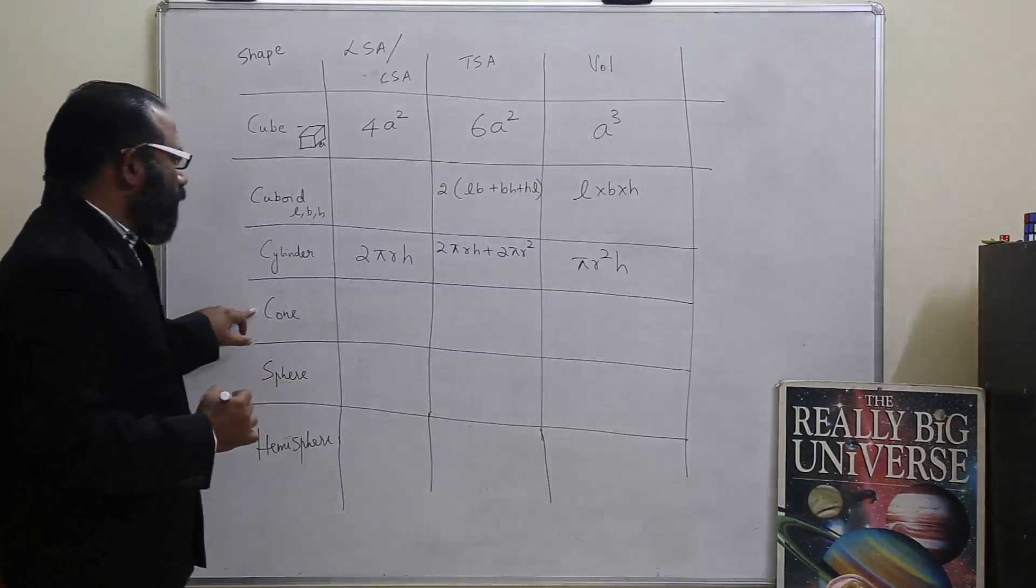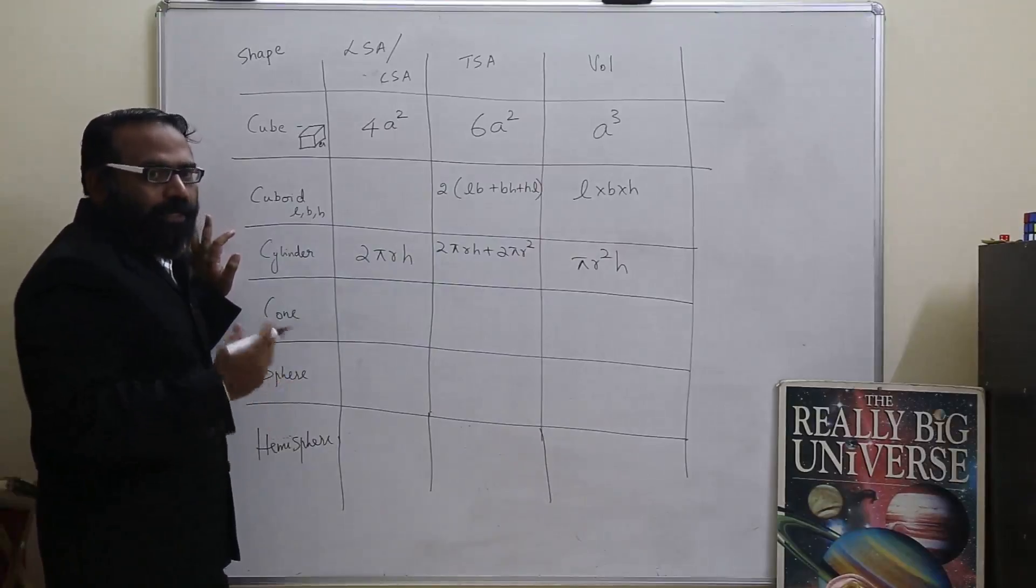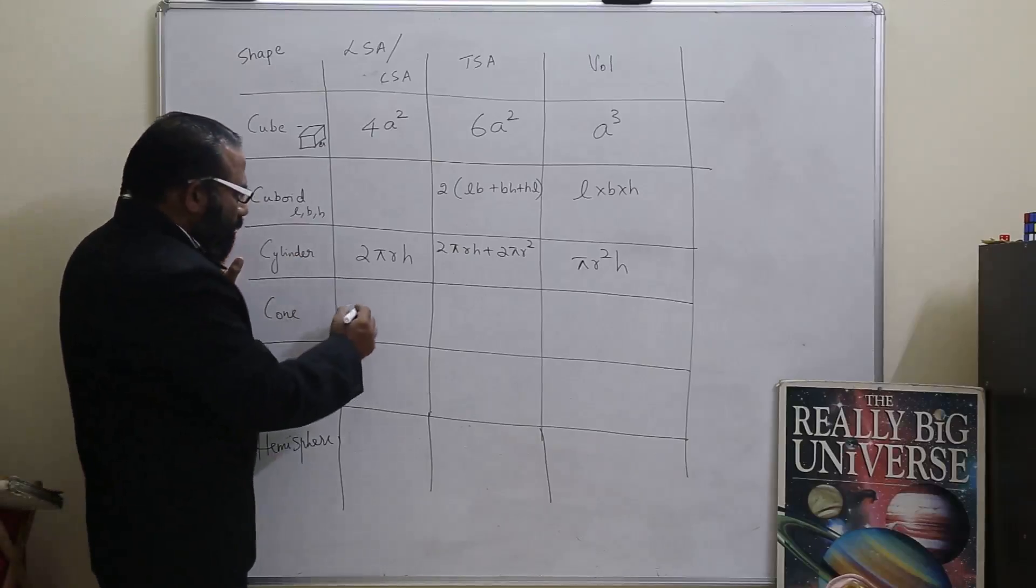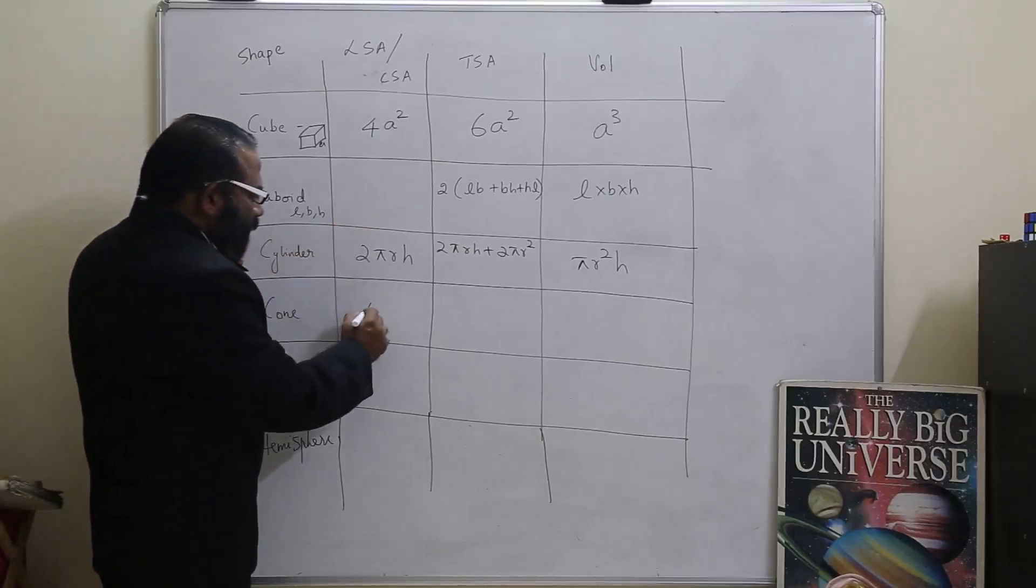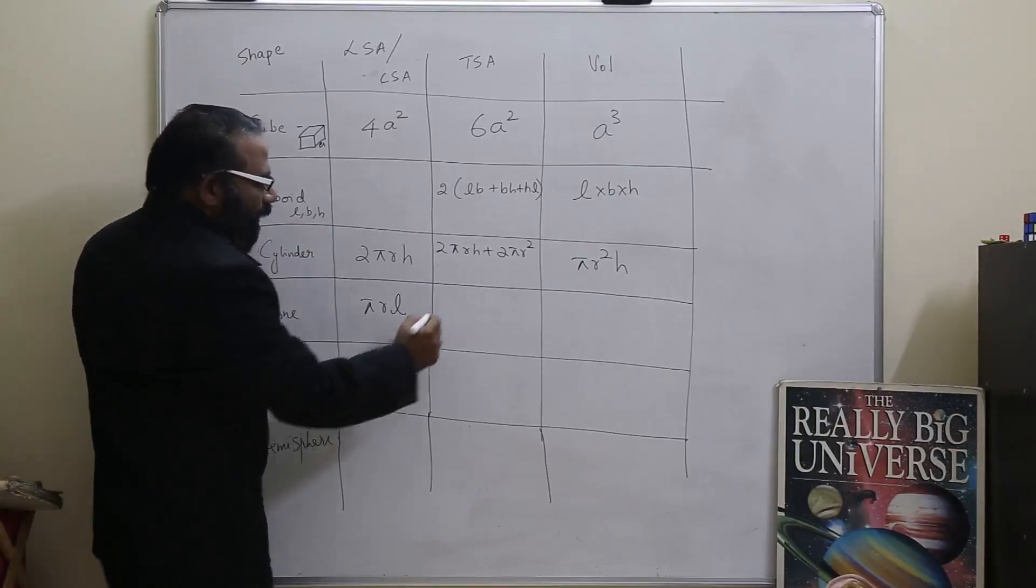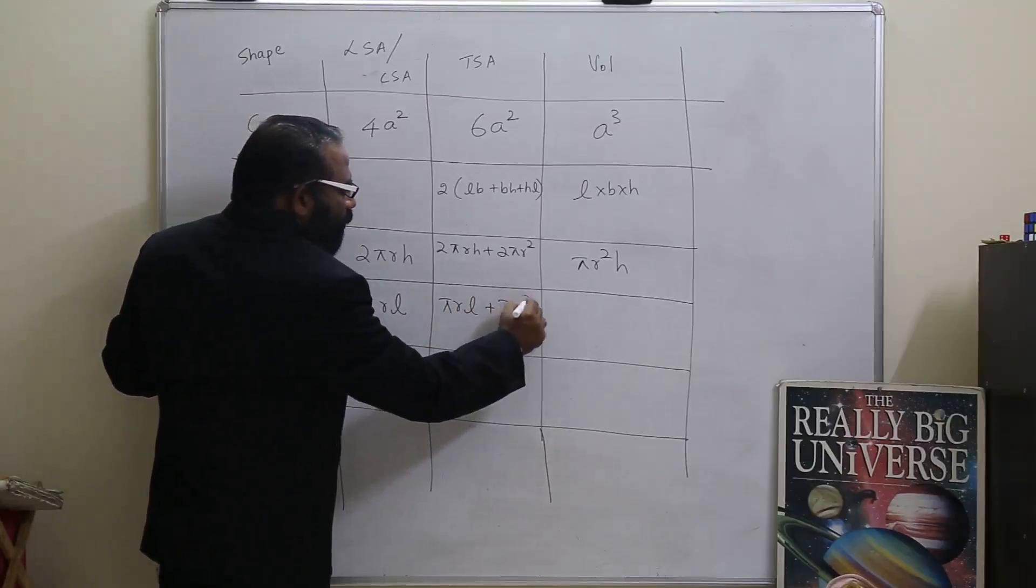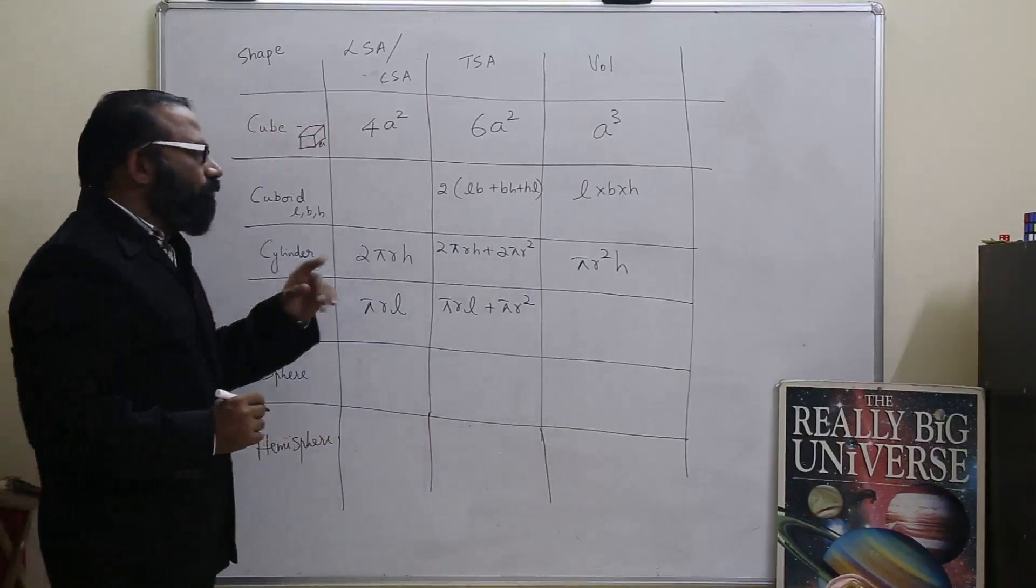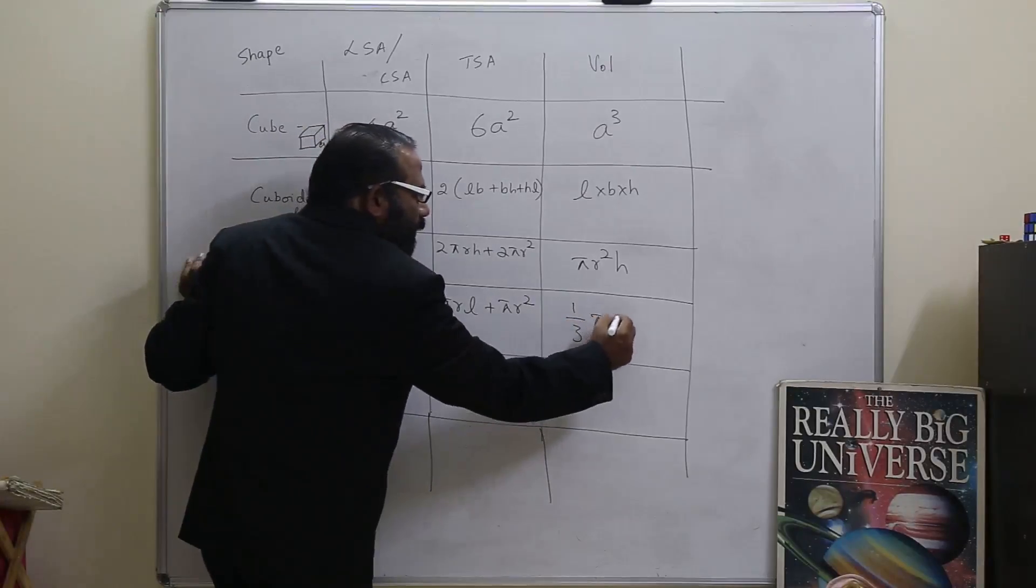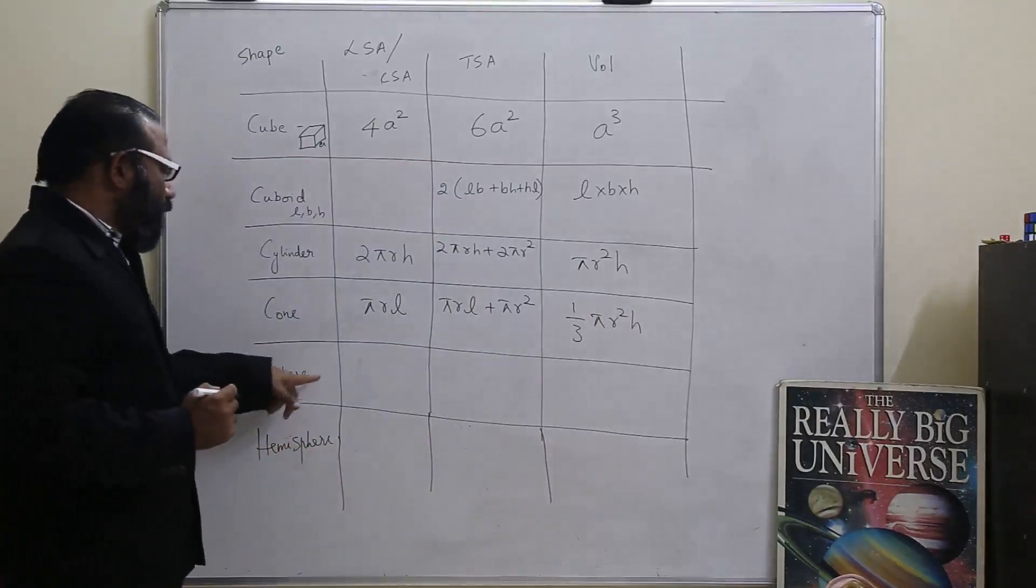Now next we go on to cone having a radius r, height h, and the slant height L. So the curved surface area would be πrl, and the total surface area is πrl plus πr squared. Now the volume, it is 1 by 3 πr squared h. Now move on to the sphere.